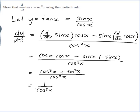And 1 over cos is sec. So 1 over cos squared is sec squared. And that's the end of the problem. I've showed that d/dx of tan x is sec squared x using the quotient rule.